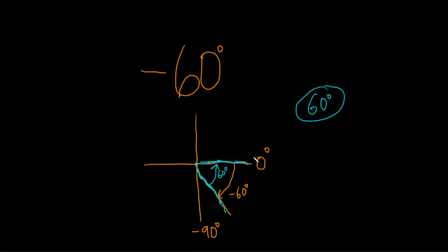Just always draw it. Remember, it's the positive acute angle that connects the x-axis and the terminal side. If you draw it, you'll be able to find it.